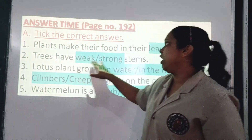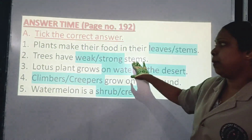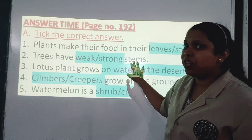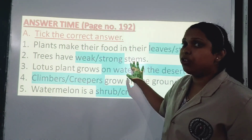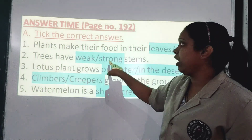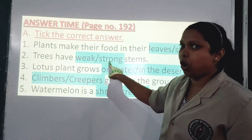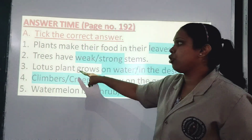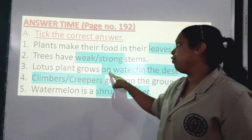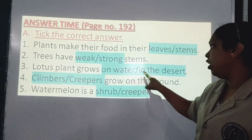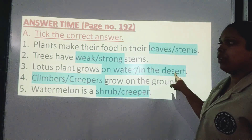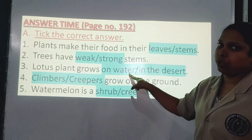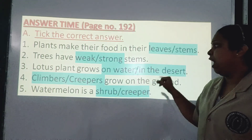Second question: Trees have a thin or strong stem? The trunk of the tree is very very strong. Put a tick mark on strong. Third question: Lotus plant grows on water or in the desert? Lotus plant can grow on water. Put a tick mark on water.